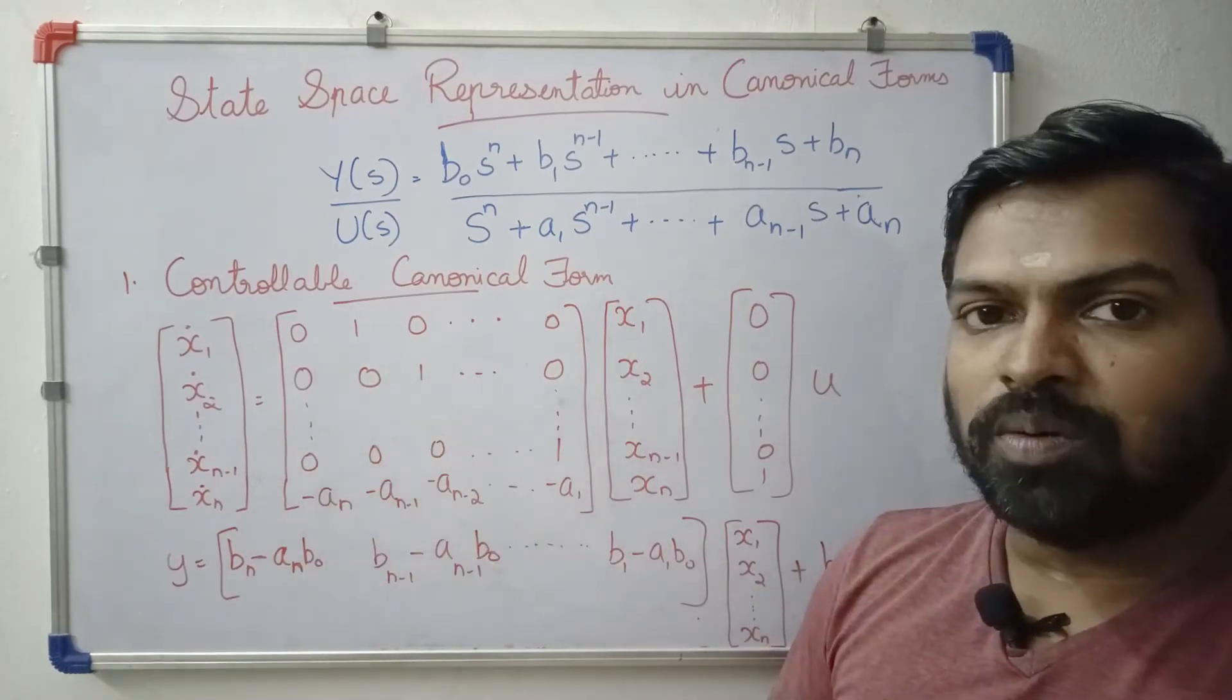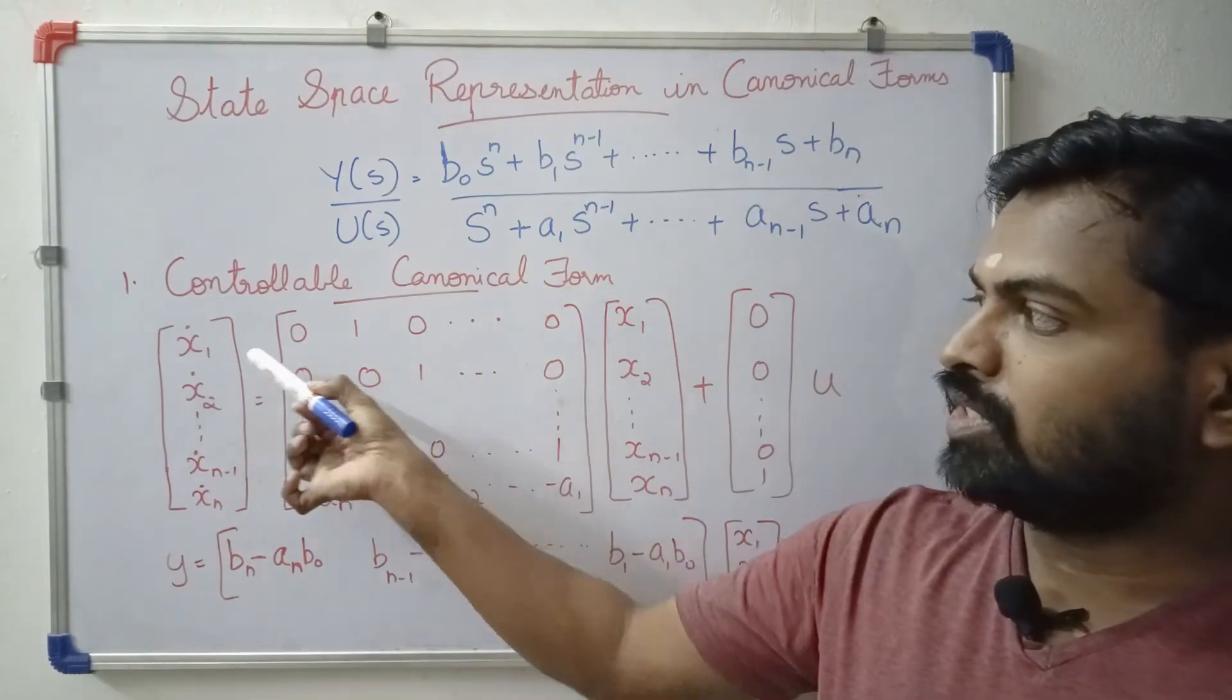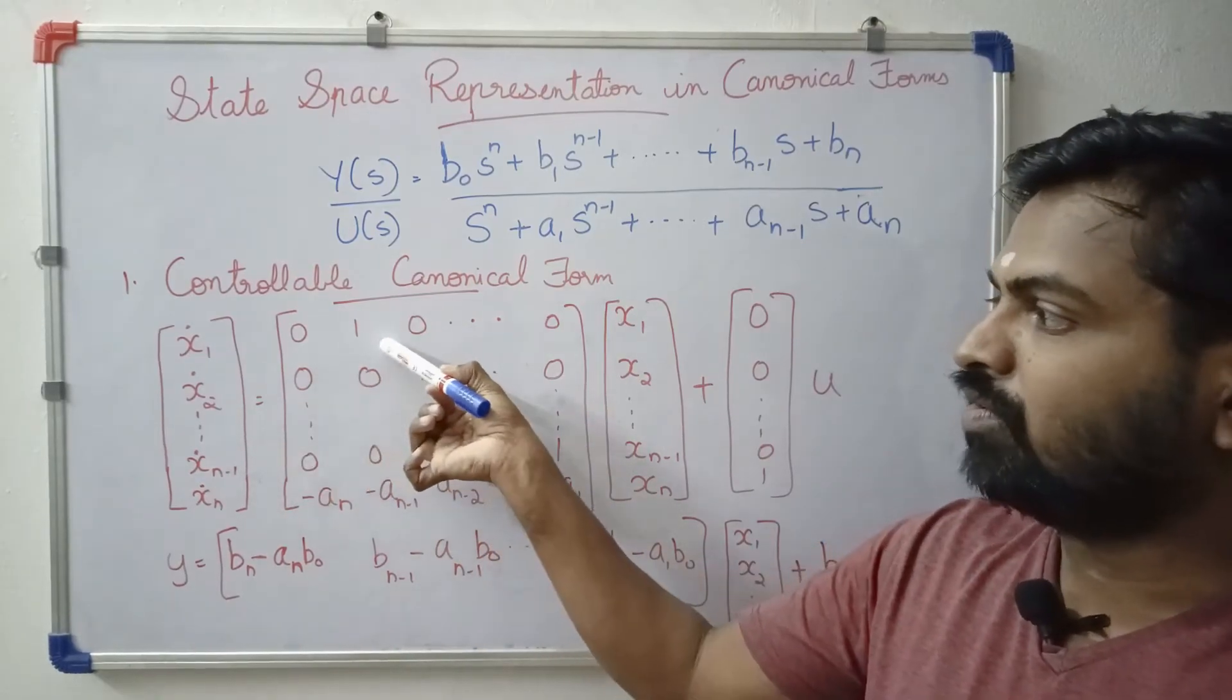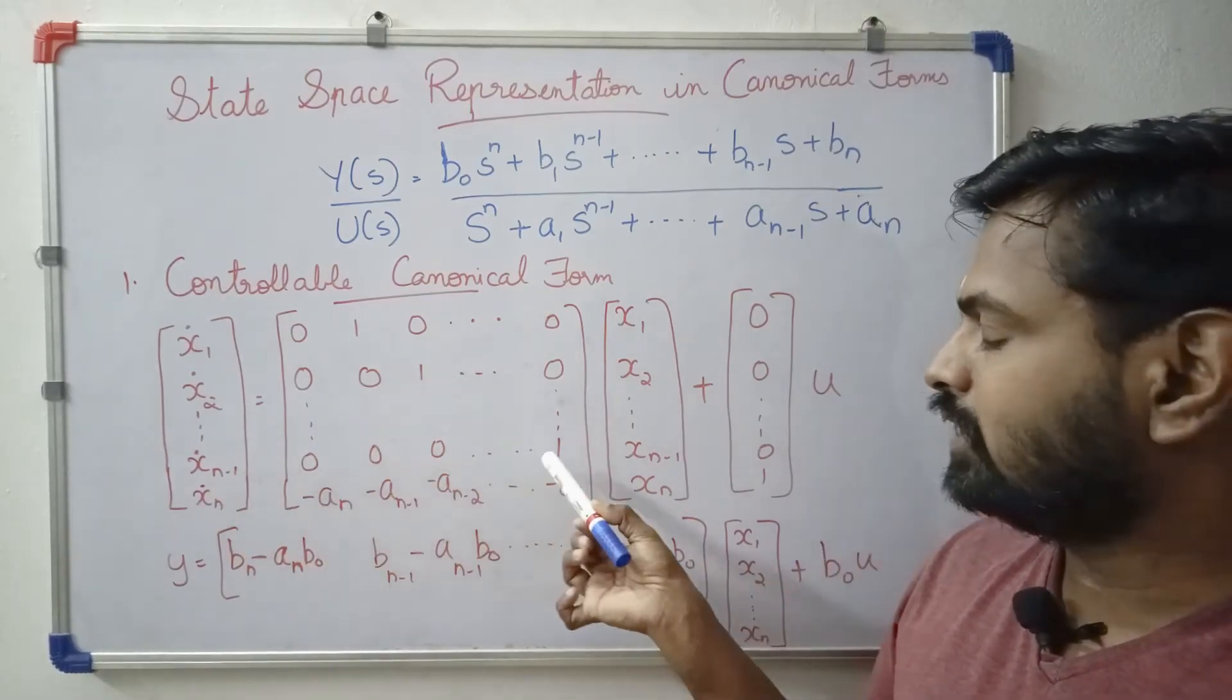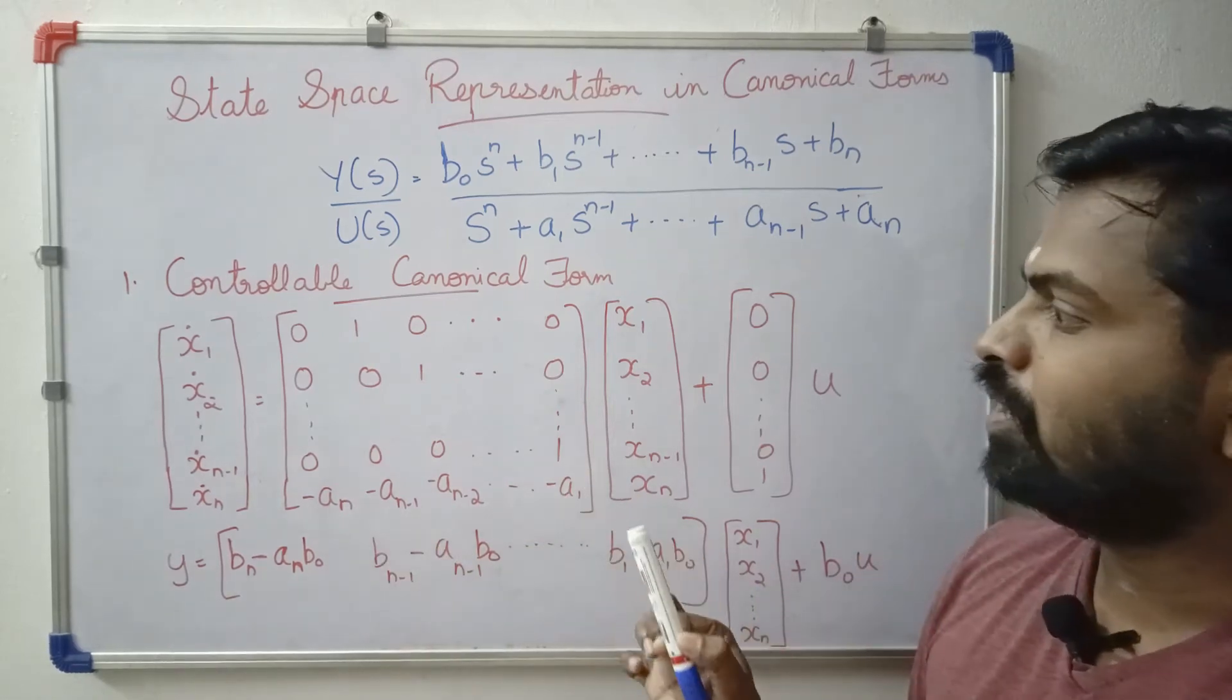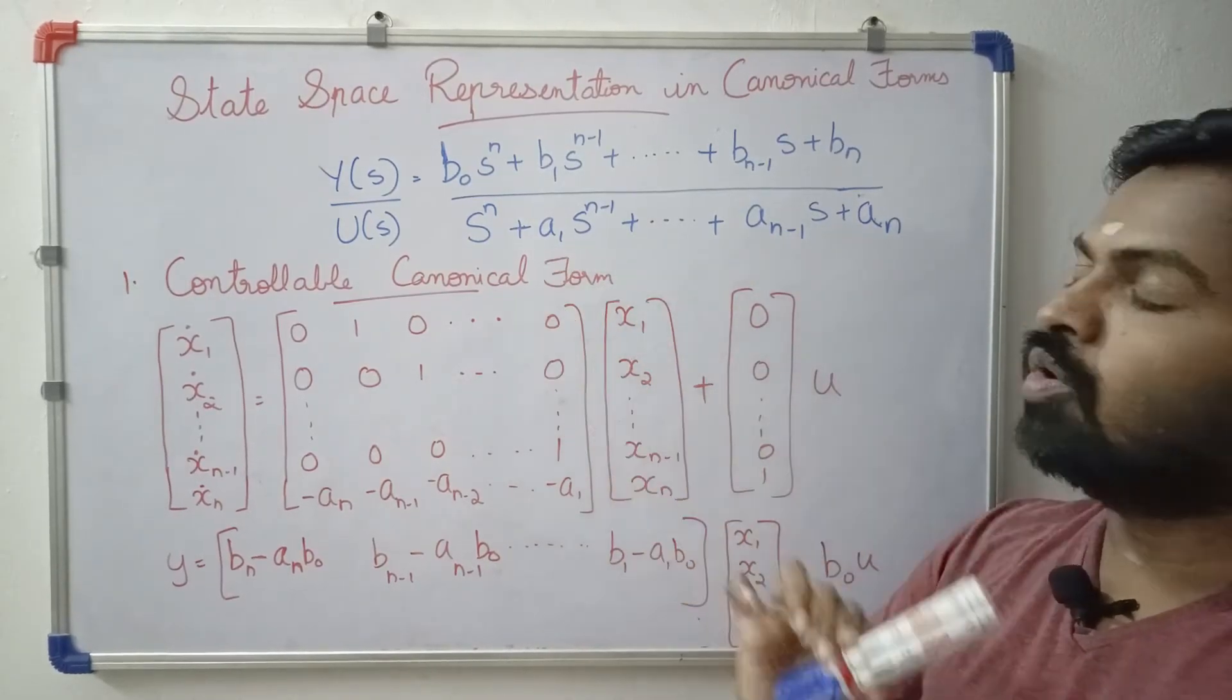For phase variable form, we have a matrix. Then x1 dot equals x2, x2 dot equals 0, 0, 1, and so on. The last row contains the coefficients.